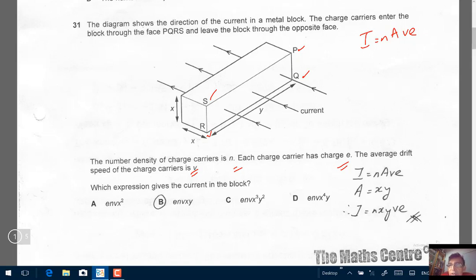So we have N A V E. So this area of the cross section, we know it is, this one here is Y. This is X. So it will be X times Y. So I will be equal to N X Y V E. So that's what I've done here. Correct response will be B.